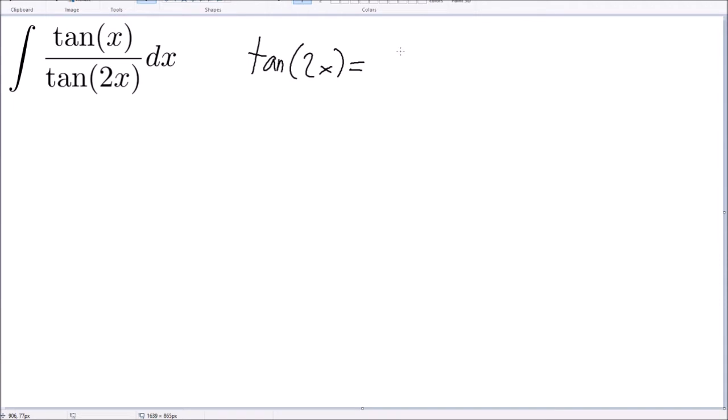Okay, so that should be like 2 tangent of x over 1 minus tangent squared. Oh okay, then because this is at the bottom, that tangent x is going to cancel out.